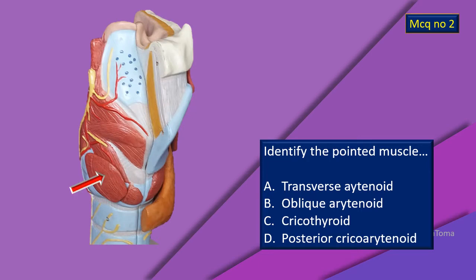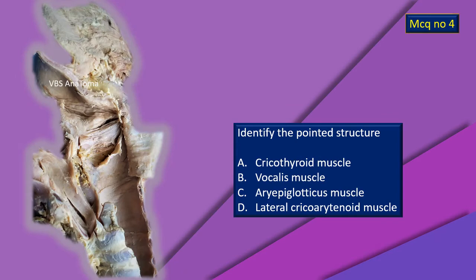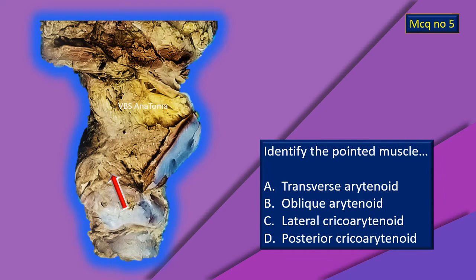MCQ number 2 — again, another muscle with an arrow pointing it out. Try to identify. Now, a hint: MCQ number 3 is not a muscle but an important landmark around which we will be discussing. Identify it from the four options. MCQ number 4, yet another muscle. MCQ number 5, again a muscle. Remember, today's topic is intrinsic muscles of the larynx, so naturally you will have many muscles to identify.